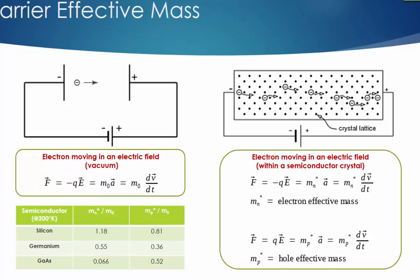Now let's look at the right picture. Here we are looking at the motion of an electron in an electric field within a crystal. Can the electron still move freely just like in a vacuum? No, it cannot, because the electron will collide with many semiconductor atoms.